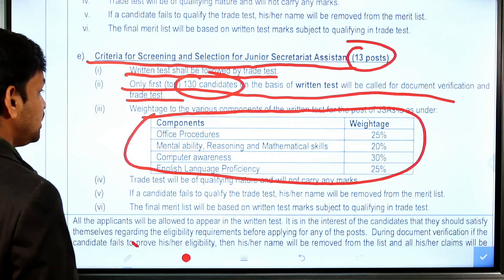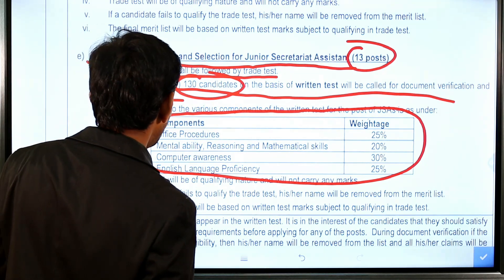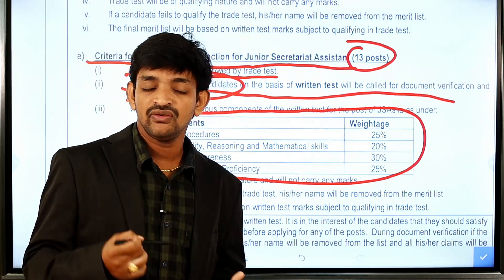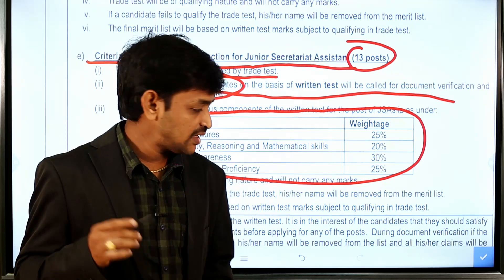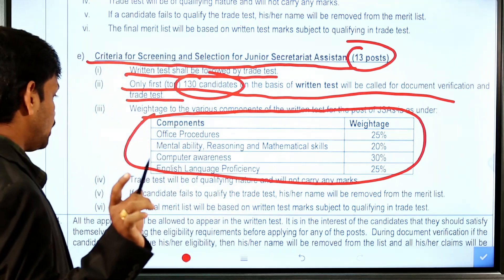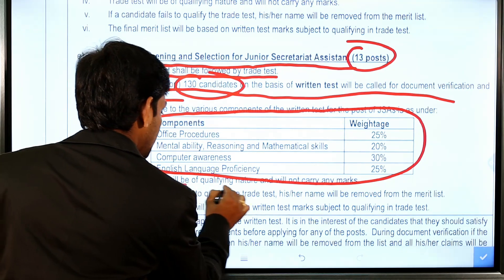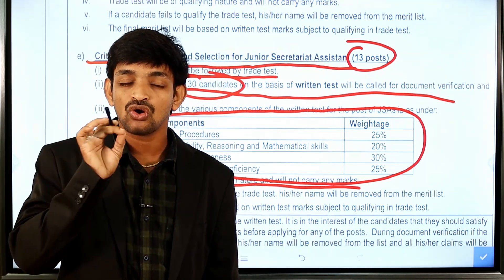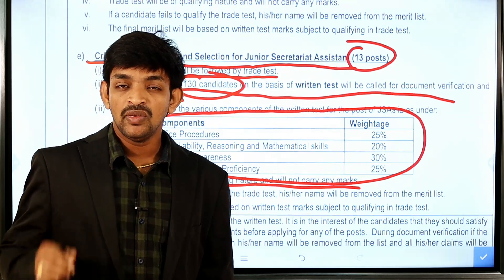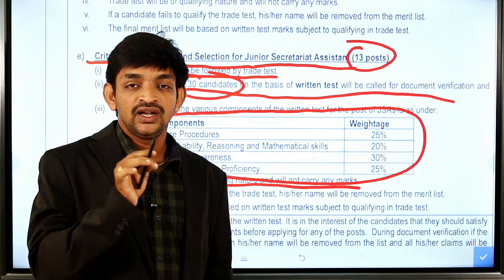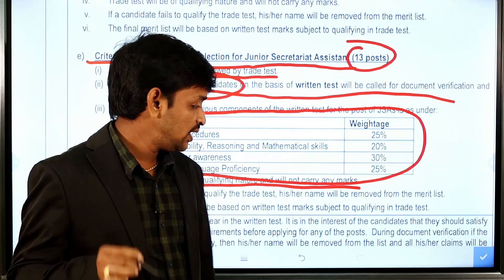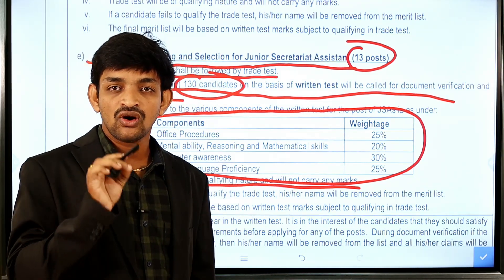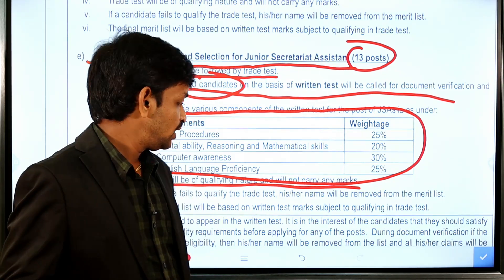The written test subjects and weightage are: Mental Ability and Reasoning/Mathematics Skills — 20%; Computer Awareness — 30%; English Language Proficiency — 25%. After the written test, candidates who qualify will proceed to the trade test. A high score in the written test is needed to qualify for the job.